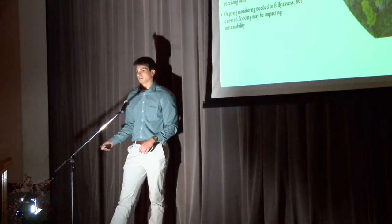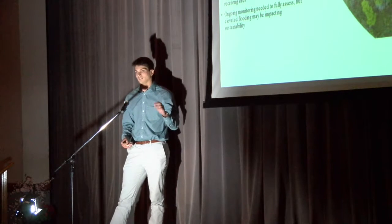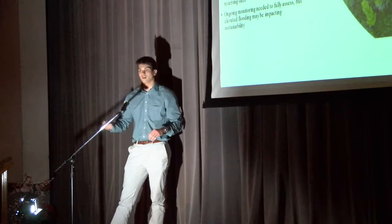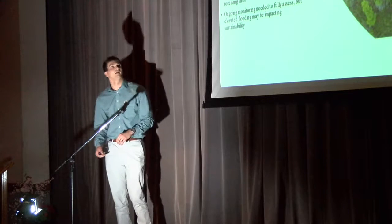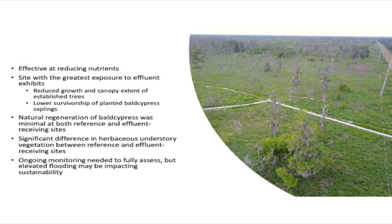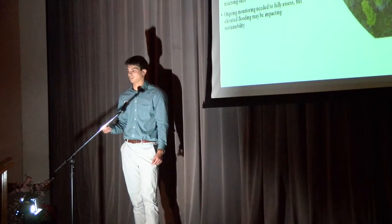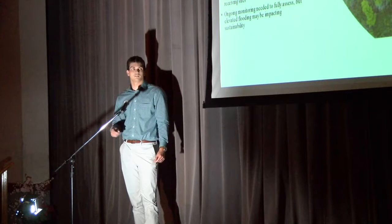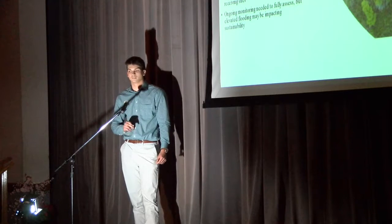What my project is showing so far is that this wetland is effective at reducing nutrient levels — by the end of the wetland we're no longer seeing the elevated levels of nitrogen and phosphorus. However, in the sites receiving the highest influence from wastewater, we see that the adult trees have lowered growth as well as a lowered canopy, and that planted bald cypress seedlings have lower survivorship in these sites with the highest influence of wastewater.